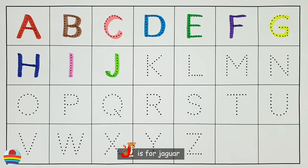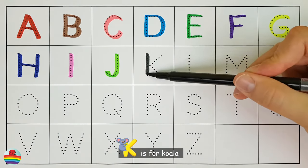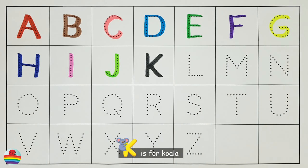J. J is for Jaguar. K. K is for Koala. L. L is for Lion.